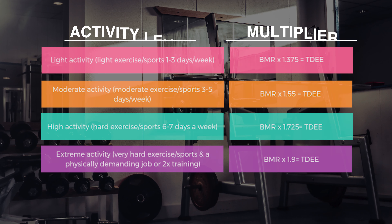Next, we're moving on to activity thermogenesis. The chart I'm pulling up goes from sedentary all the way to active seven days a week. Pick whatever your current activity level is right now. Choose the multiplier that best fits your current state, then go ahead and multiply your BMR by your activity thermogenesis multiplier. I'll pause the video here and wait until you're done.